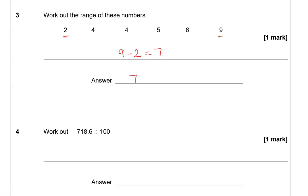Work out 718.6 divided by 100. So to divide this number by 100, it means we're going to make it 100 times smaller. Rather than going through the long or the short division method, there is a shorter way to do this.